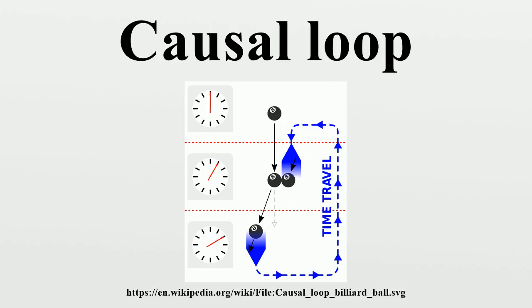Echeverria and Klinkhammer actually found that there was more than one self-consistent solution, with slightly different angles for the glancing blow in each case. Later analysis by Thorne and Robert Forward showed that for certain initial trajectories of the billiard ball, there could actually be an infinite number of self-consistent solutions.